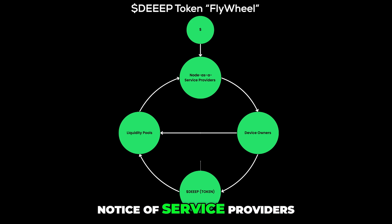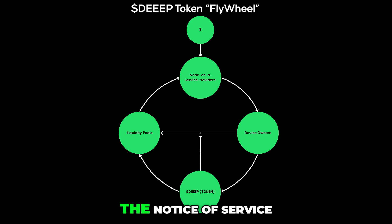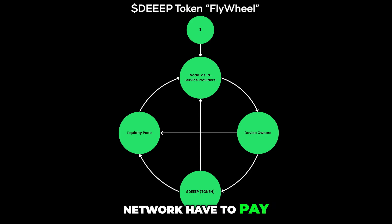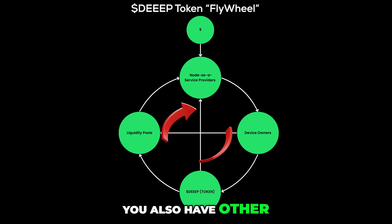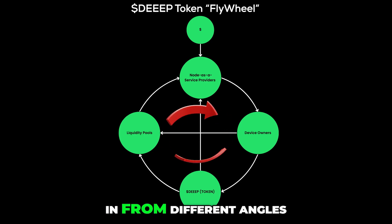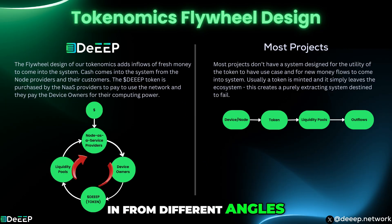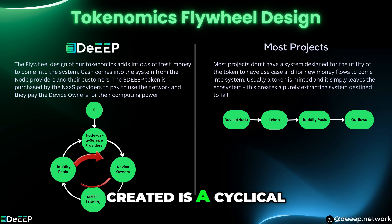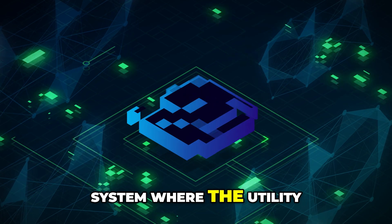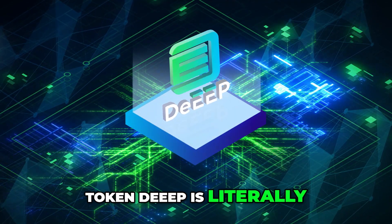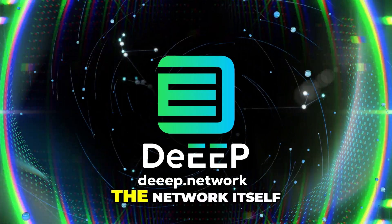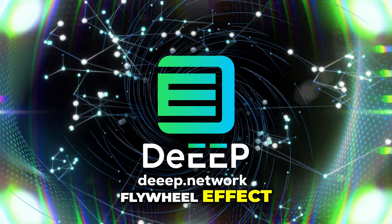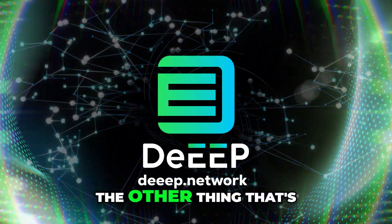A lot of users also have Web3 workloads which they will pay in Deep to host with the node-as-a-service providers. Additionally, the node-as-a-service providers who use the network have to pay in Deep. So not only do you have the token itself, you also have fresh cash coming in from different angles. What we've essentially created is a cyclical system where the utility token Deep is literally the lifeblood of the network itself.